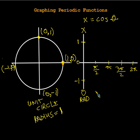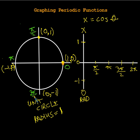We're going to go ahead and walk around this circle and put in our radians. So this is 0 radians here, and up here this will be 90 degrees, but it's pi over 2 radians. This one here is going to be pi radians, and then this one over here is 3 pi over 2 radians. And finally, when we get all the way back here, this can be written as 0 radians or 2 pi radians. Now we're going to graph x equals cosine of theta.